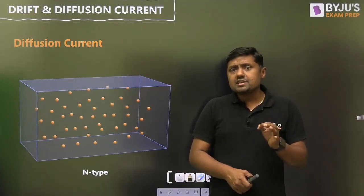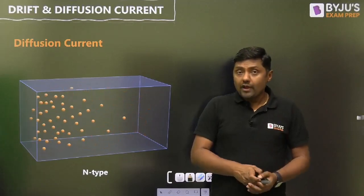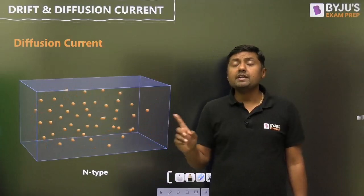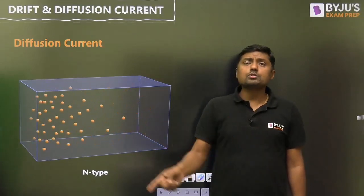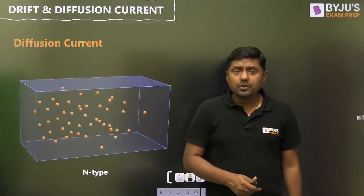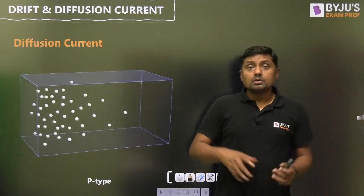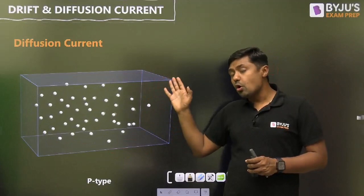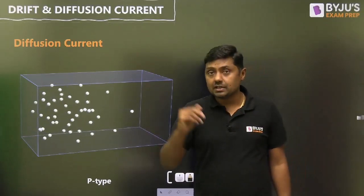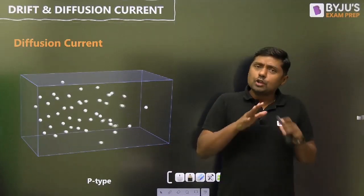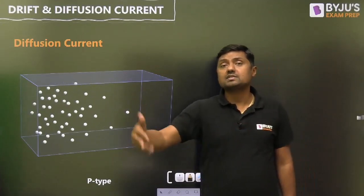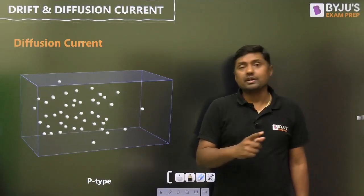There is a concentration gradient dN/dx. When concentration decreases in the x direction, the gradient is negative — so here dN/dx is negative. The electron will move in the positive x direction, but the current will be in the opposite direction, meaning the negative x direction. In the case of a P-type bar, the concentration of holes is very high at one end and almost zero at the other end. There is again a negative concentration gradient because it is decreasing in the positive x direction — that is, dP/dx is negative. Without any external field, the hole will move from higher concentration to lower concentration, and the current will be in the positive x direction because the charge of the hole is positive.